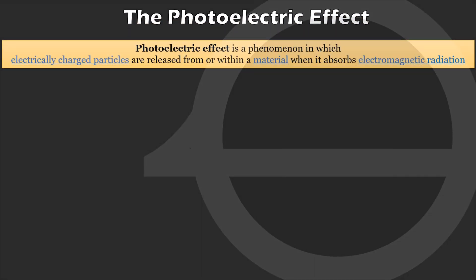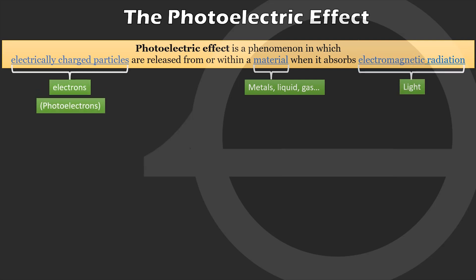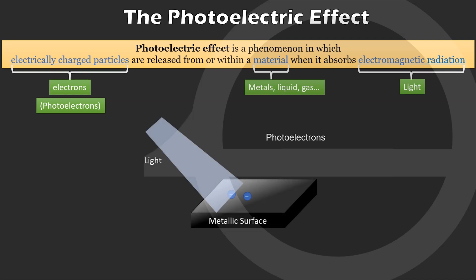The photoelectric effect is a phenomenon in which electrically charged particles, such as electrons, are released from or within a material, usually metals, when it absorbs electromagnetic radiation like light. The emitted electrons are called photoelectrons. The following animation illustrates this phenomenon.